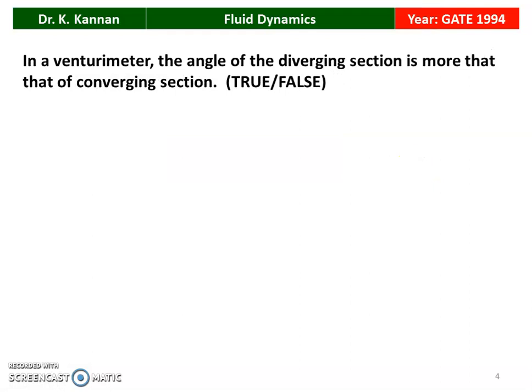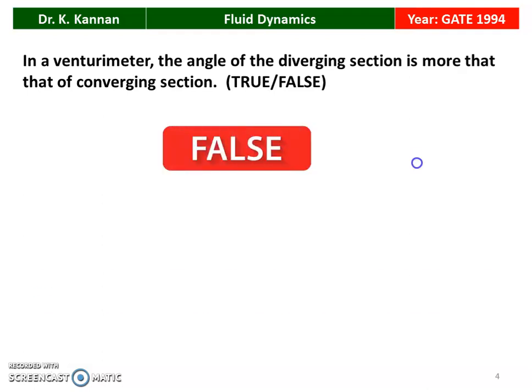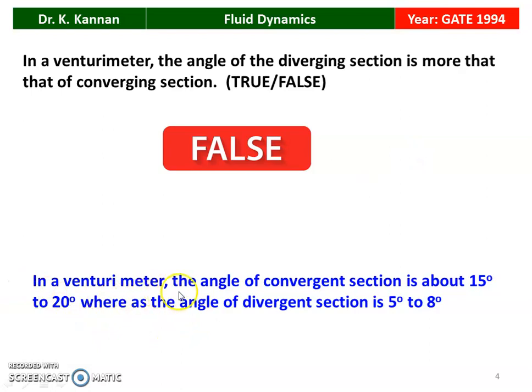The second question, again from the 1994 question paper: in a venturimeter, the angle of the divergence section is more than that of the converging section — whether this is true or false. The statement is false. In the venturimeter, the angle of the convergence section is about 15 to 20 degrees, whereas the angle of the divergence section is 5 to 8 degrees. So the angle of divergence is less than the angle of convergence.